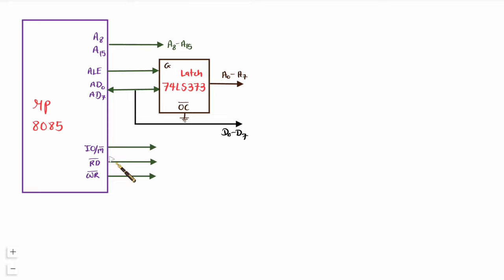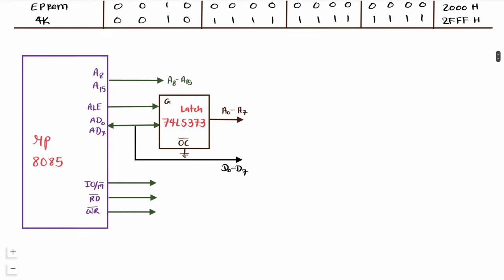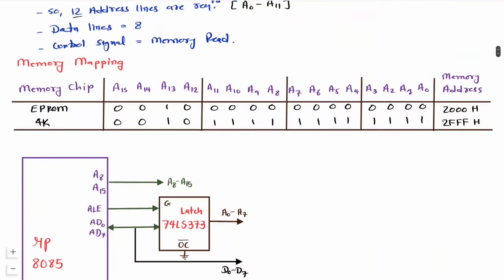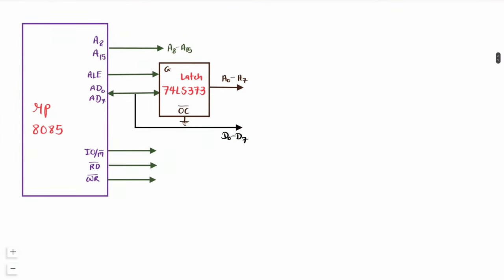Since we are dealing with EEPROM, the control signal should be memory read. To generate control signals, we use a 3×8 decoder. IO/memory bar is connected to C, read bar is connected to B, and write bar is connected to A. The decoder has three inputs A, B, C, and based on their values it selects output lines.